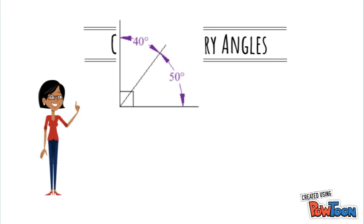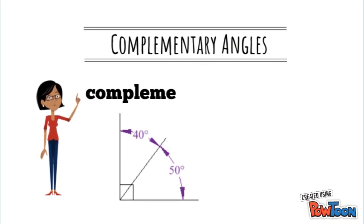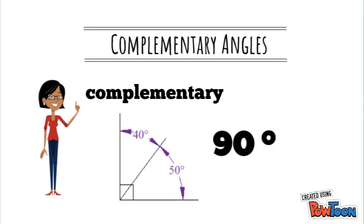Two angles are said to be complementary if they add up to 90 degrees, forming a right angle.